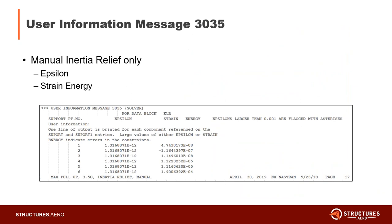If you're running manual inertia relief, you'll get user information message 3035 right after the OLOAD resultant, giving you values for epsilon and strain energy for each degree of freedom specified on your SUPORT card. Since we constrained all six degrees of freedom, we get six epsilon values and six strain energy values. This is a very important check — you want to make sure these numbers are very small, especially the epsilon values, which should be essentially zero. Values like 1e-12 are acceptable; if they seem high it's possible your SUPORT card is not defined correctly.